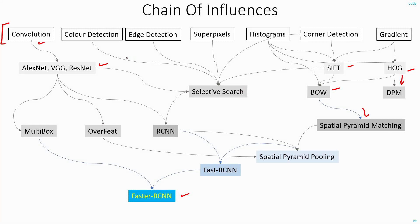Selective search in the middle combined the concepts of color, edges, super pixels and corner detection along with SIFT feature extractors plus CNNs to create an object detection framework. On the left we have Multibox and OverFeat networks built on top of AlexNet and VGGNet architectures. Then we have R-CNN, which combined CNNs with selective search for object detection. By combining R-CNN and spatial pyramid matching we got SPPNet, and from SPPNet we got Fast R-CNN, and finally Faster R-CNN using the concept of anchor boxes.